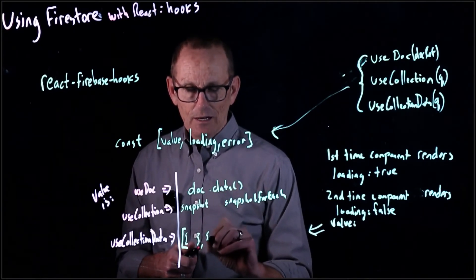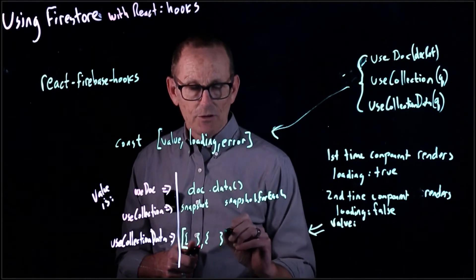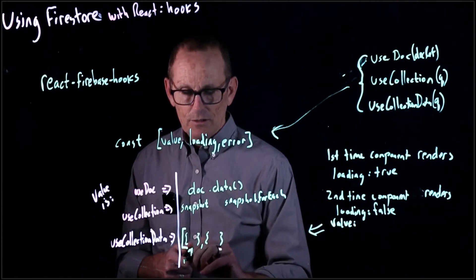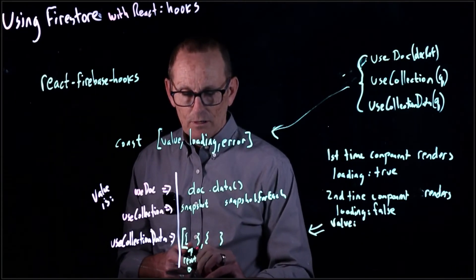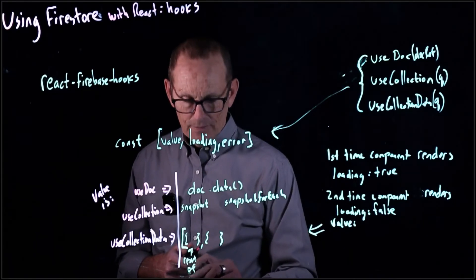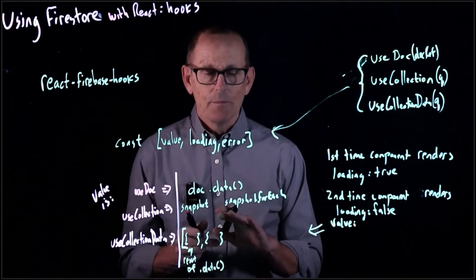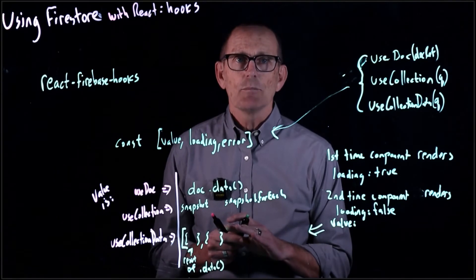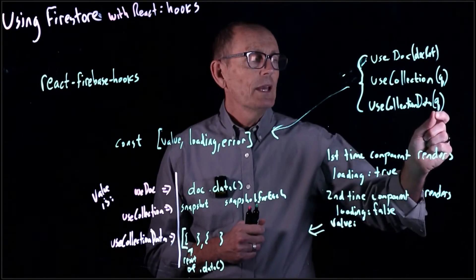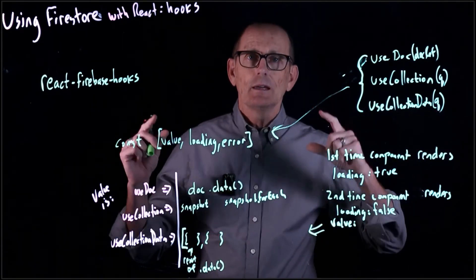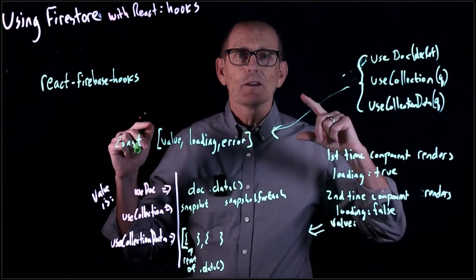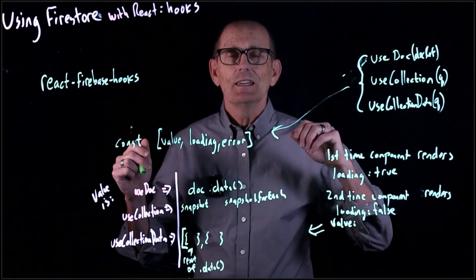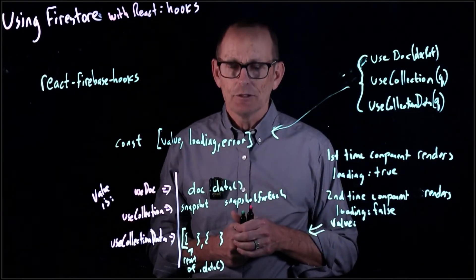It's going to be an array, basically, of the return result of calling .data for each of the elements in our snapshot. We make our query and we get back then an array in order, as specified by the query, of the documents, fields, and values.